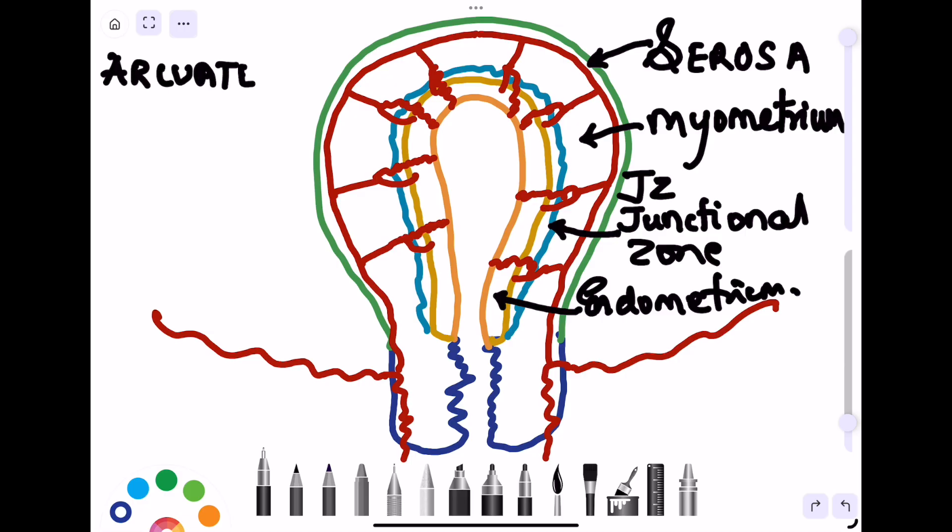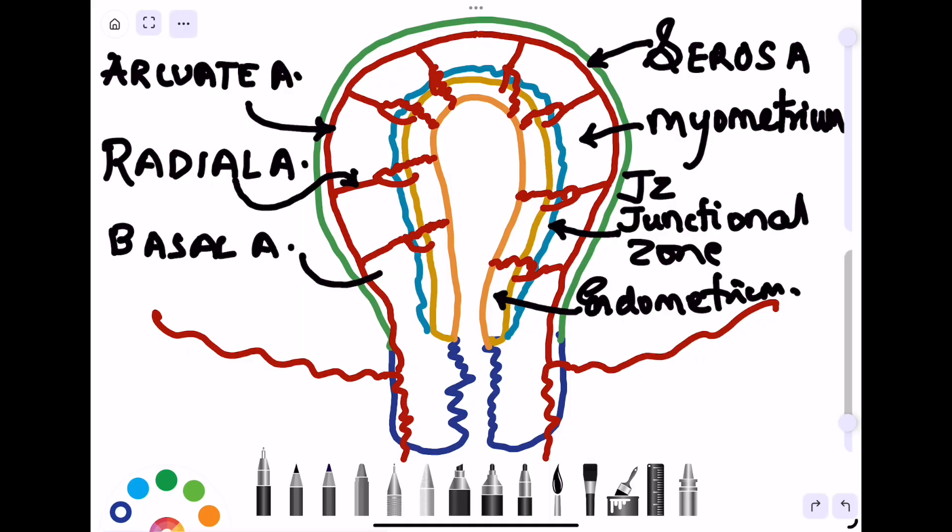So the ascending branch divides into anterior and posterior branches that move across the uterus from the lateral to the middle and join their counterpart from the other side. That is known as an arcuate artery. The arcuate artery then gives a branch known as a radial artery that pierces through the myometrium and reaches up to the endometrium.